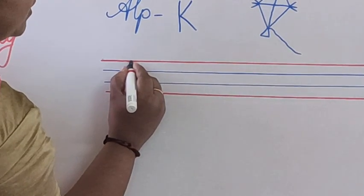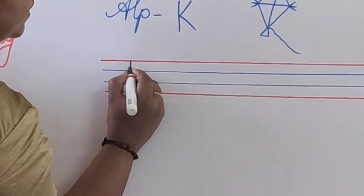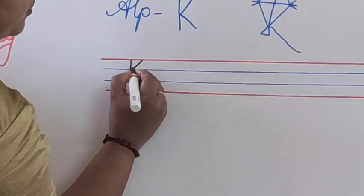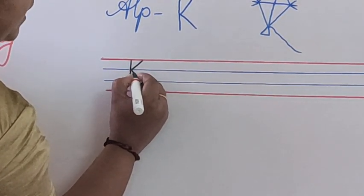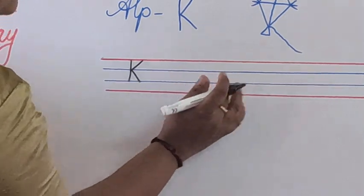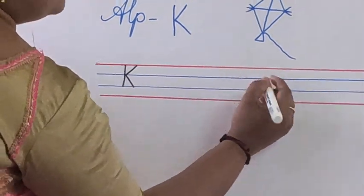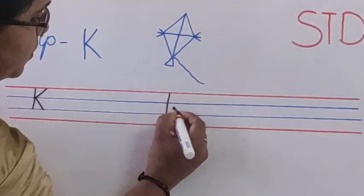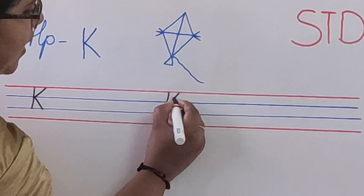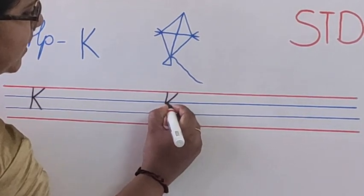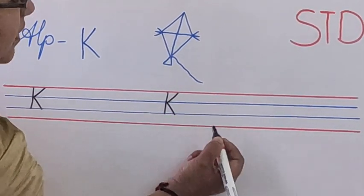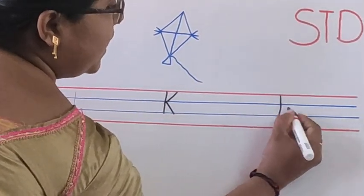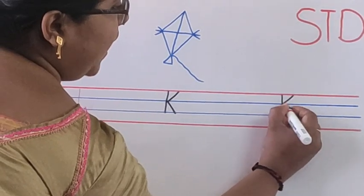Start from red line and ends in second blue line — alphabet K. Start from red line and ends in second blue line — alphabet K. This is alphabet K.